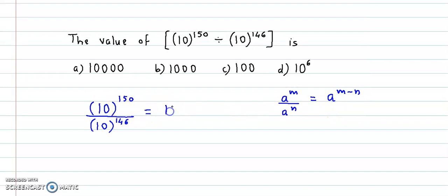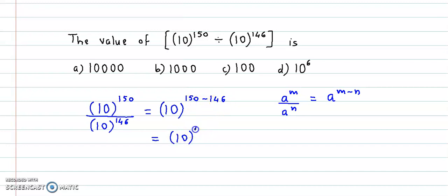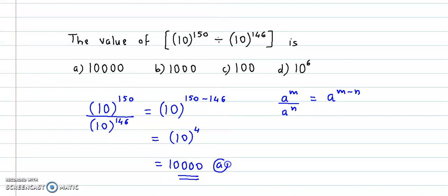So we obtain 10 raised to 150 minus 146. This difference is 4, so the value is 10 raised to 4, which is equal to 10,000. So the correct answer is option A.